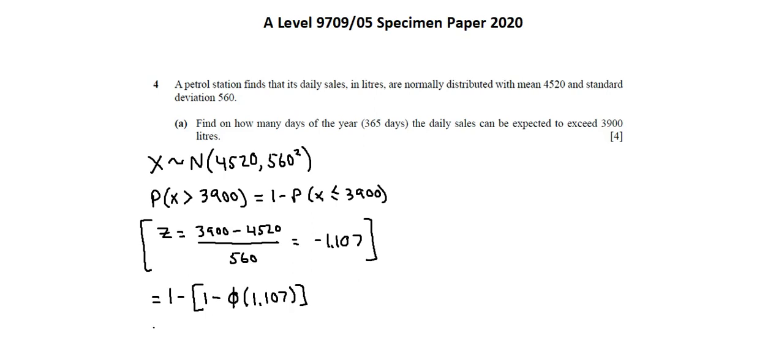Now we're going to do some simplification. 1 minus 1 cancels. The minus distributed to the minus phi of 1.107 gives us positive phi of 1.107. And when I look up this value in the normal distribution table, I find 0.8657.